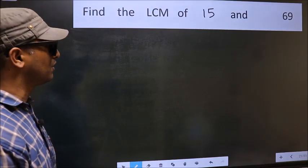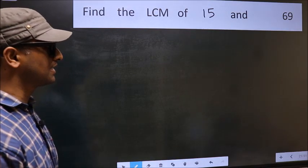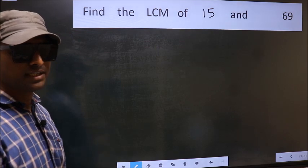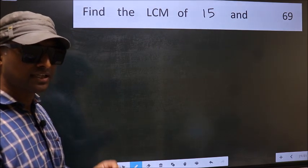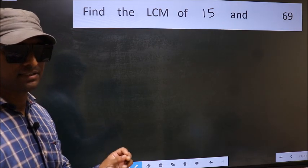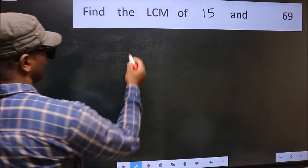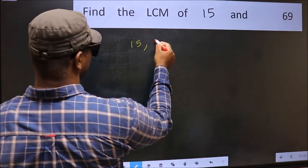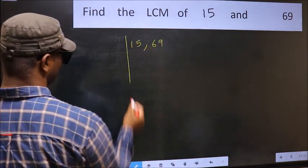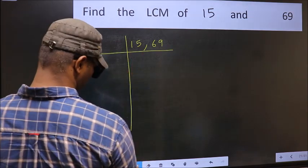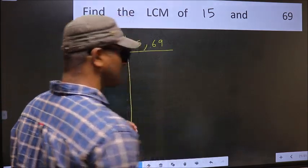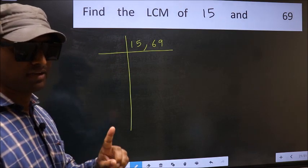Find the LCM of 15 and 69. To find the LCM, we should frame it in this way. Write 15, 69. This is your step 1.